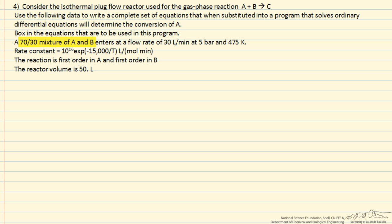So we're feeding a 70-30 mixture of A and B. We're given the overall flow rate, the pressure, and the temperature coming in. So we have volumetric flow rate coming in. The volumetric flow rate leaving is going to be different. It's isothermal, so the temperature is the same. We're given the volume, so volume equals 0, volume equals 50 liters.